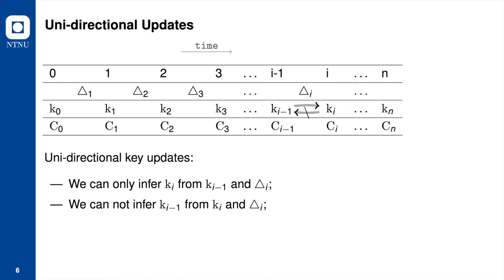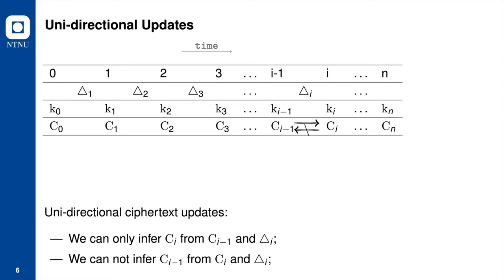If an updatable encryption scheme has unidirectional key updates, the update token can be used to infer the new key from the old key, but it cannot be used to derive the old key from the new key. If an updatable encryption scheme has unidirectional ciphertext updates, the update token can only move ciphertext from the old key to the new key, but not vice versa.